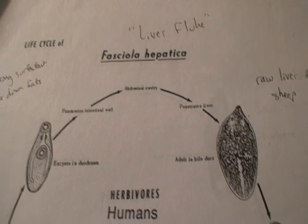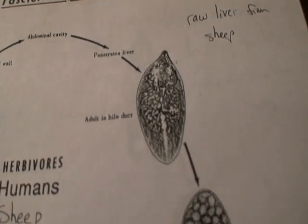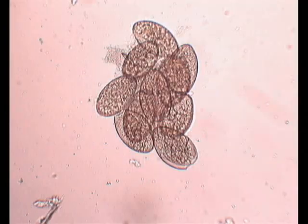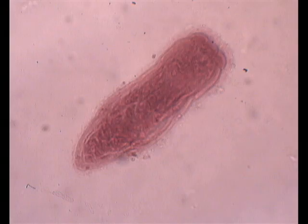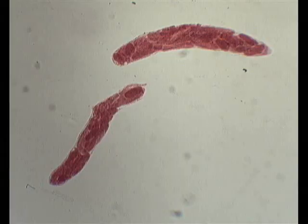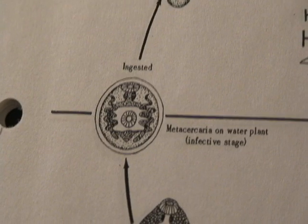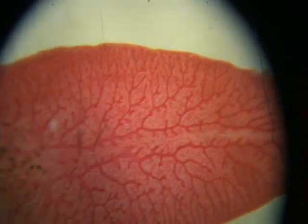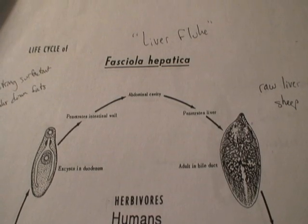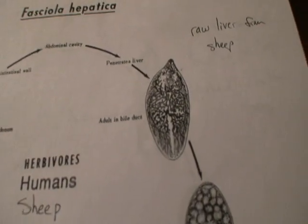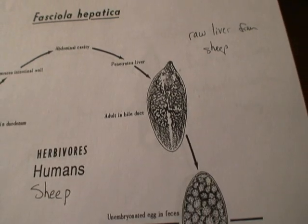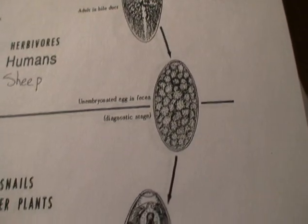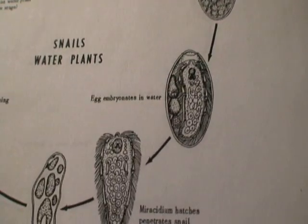Let's focus now on the life cycle of Fasciola hepatica in particular. The sheep liver fluke has seven different developmental forms: an egg, miracidium, sporocyst, redia, cercaria, metacercaria, and adult. The adult lives in the bile duct of the vertebrate host, which is usually a sheep but can also be a human. Eggs then exit the host through its feces, which is considered its diagnostic stage. The egg then develops into an embryo in water, which eventually releases the miracidium.